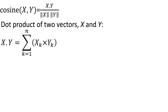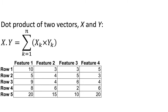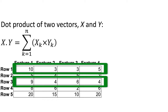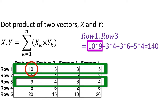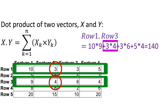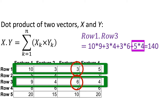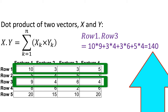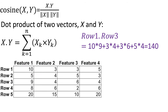For example, let us say that we have a four-dimensional dataset — that is, we have four features or four columns in the data. The dot product between row one and row three is equal to 10 times 9, plus 3 times 4, plus 3 times 6, plus 5 times 4, which is equal to 140.